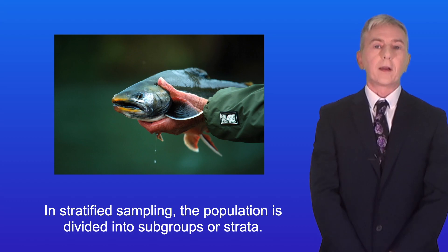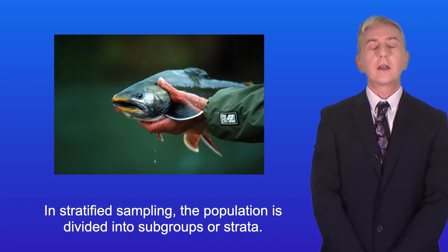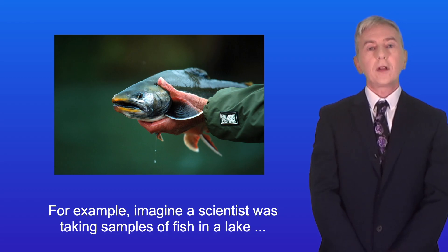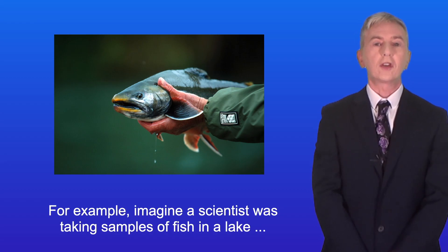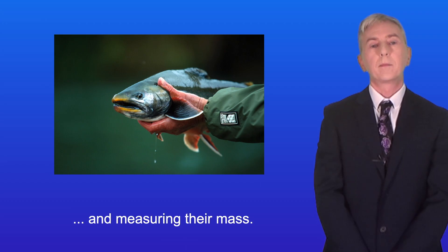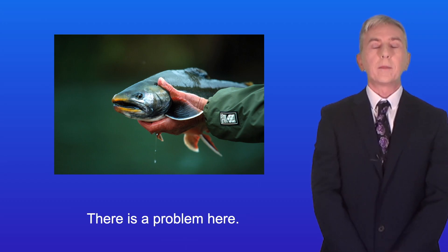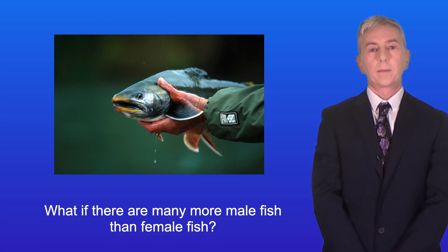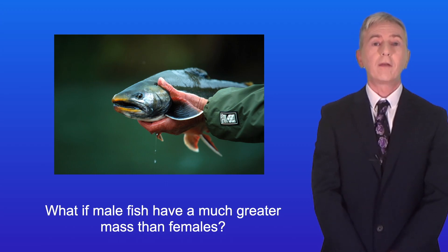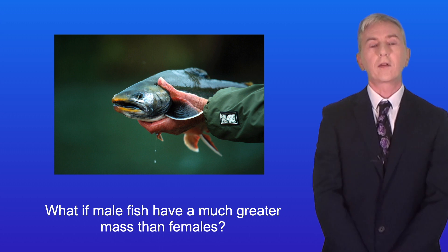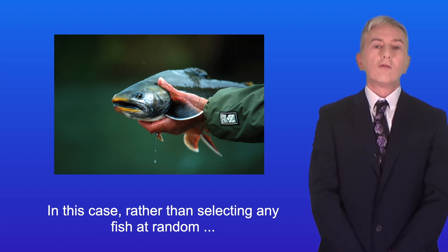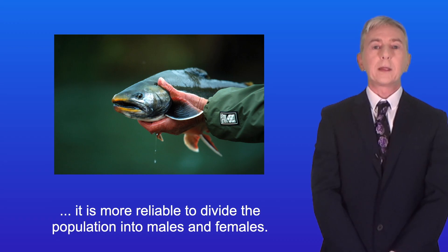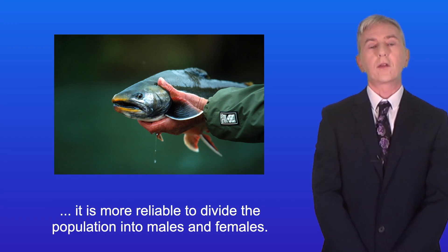In stratified sampling, the population is divided into subgroups or strata. For example, imagine a scientist was taking samples of fish in a lake and measuring their mass. Now there's a problem here — what if there are many more male fish than female fish? And what if male fish have a much greater mass than females? In this case, rather than selecting any fish at random, it's more reliable to divide the population into males and females.